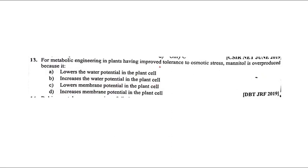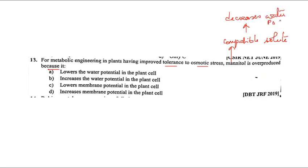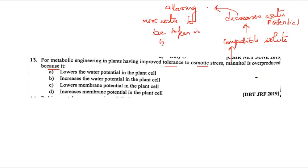For metabolic engineering in plants with improved tolerance to osmotic stress, mannitol is overproduced. The role of this compatible solute is that it decreases the water potential. When water potential is decreased, it allows more water to be taken in by the leaf - lowering water potential in plants. So A is the correct answer.